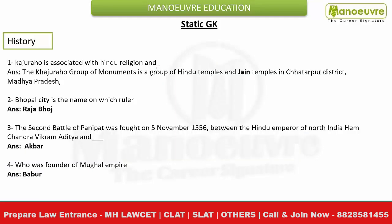So let's see the questions from the History section - there were 4 questions from history. As much as I remember, I tried to frame the questions here. One question was related to Khajuraho. Khajuraho is associated with Hindu religion, and the question asked which other religion it is related to, with options like Buddhism, Islam, Christianity, and Jainism.